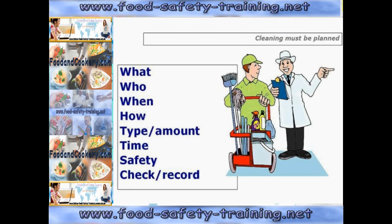The schedule itself stipulates several areas: what needs to be cleaned, who cleans it with room on the document for the person to sign, when it needs to be cleaned, how it is going to be cleaned, the type and amount of cleaner, the contact time of the chemical, and safety — i.e. personal protective equipment and what you should wear when using the chemical. This needs to be checked and recorded by a supervisor or line manager.